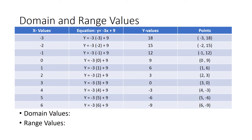Now I'm going to tell you how to find the domain and the range values. Using our function table, the domain values are the same as the x values. So I would list all of the x values as the domain. Those x values are negative three, negative two, negative one, zero, one, two, three, four, five, and six.